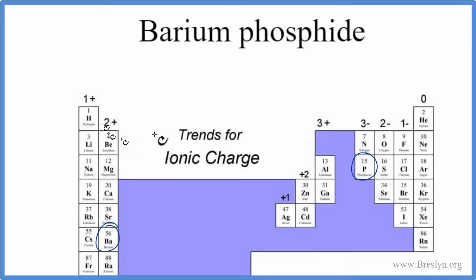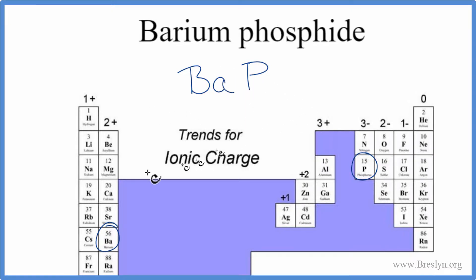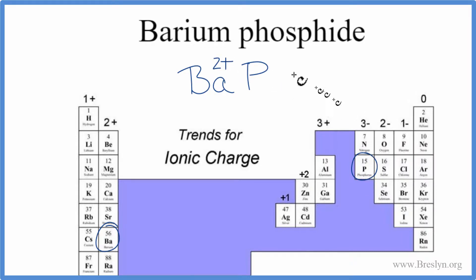We do need to consider the charges when we write the formula for barium phosphide. So let's first write Ba — that's our barium — and the symbol for the phosphide, that's the phosphorus, that's P. We'll then write the charge for each of these elements. Barium is in group 2, so everything in group 2 is 2+. And phosphorus is going to be 3-.